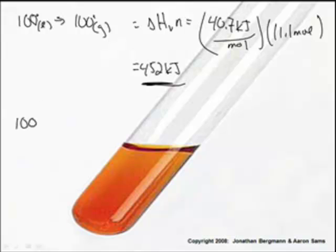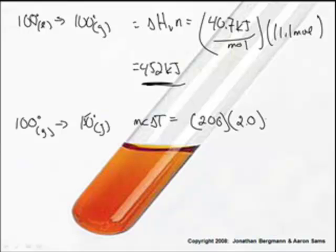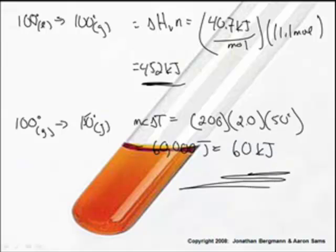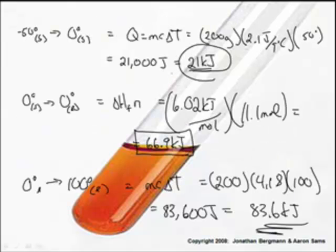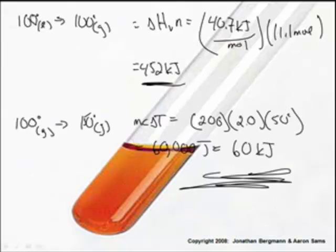And lastly, this is a long problem, 100 degrees as a gas, as steam, to 150 degrees as a gas. So that will be MC delta T, which will be 200 grams. Now the specific heat of steam is not the same as water. It's 2.0 times 50 degrees. And this gives us 60,000 joules, which of course is just 60 kilojoules. Now I just need to add up all my numbers. I have 452 plus 60 plus 83.6 plus 66.9 plus 21. We get 683.5, probably just go with 684 kilojoules.